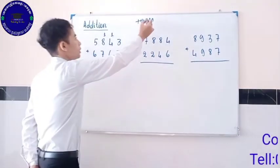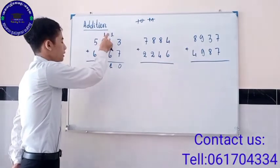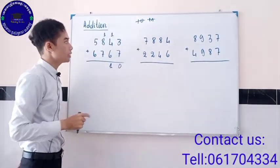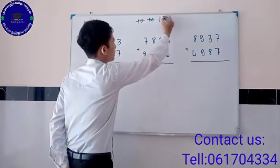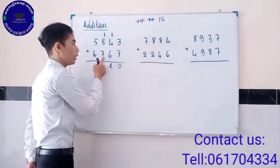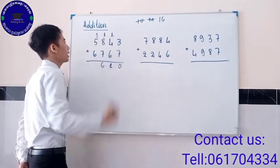Then when we add 1 and 8 and 7, we get 16. And we write 6 under 7 and carry the 1 above 5.